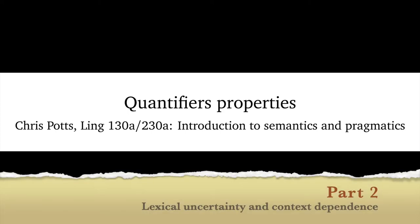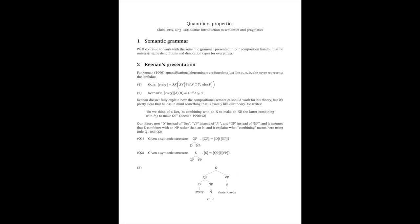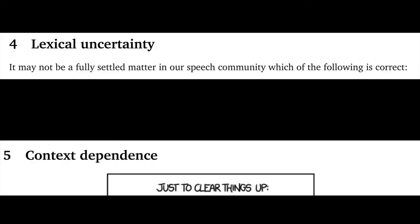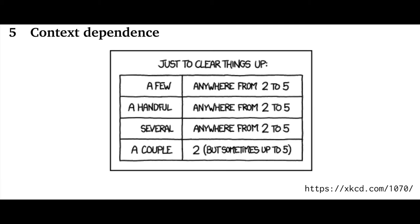Hey, Chris Potts here. This is part two in our series of screencasts on quantifier properties. In part one, we made some connections with the Keenan reading, the semantics of determiners, and we reviewed some pretty uncontroversial determiner meanings. For this screencast, we're going to focus on two pragmatic aspects of determiners: lexical uncertainty and context dependence. These two things are related and have some overlap and interactions, but I think we can tease them apart.